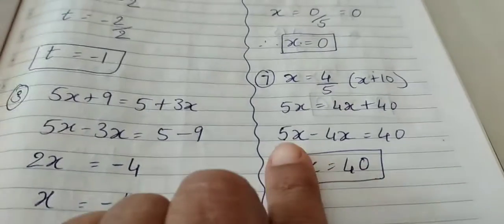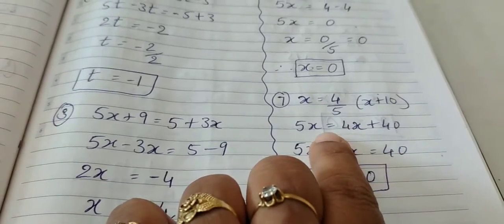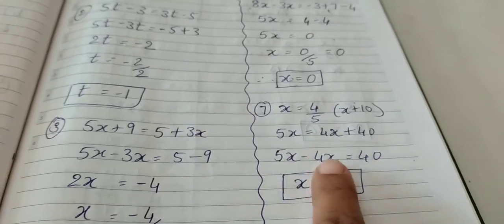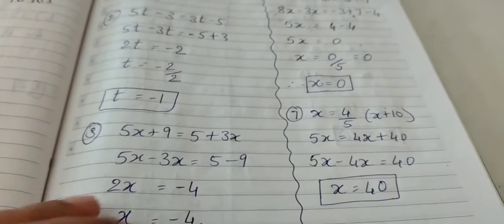So we have next step. 5x minus 4x. 4x you bring it on the other side. You get 5x minus 4x is equal to 40. 5 minus 4 is 1. Therefore x is equal to 40.